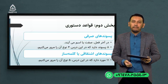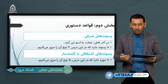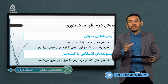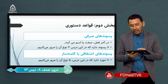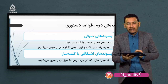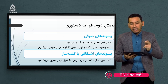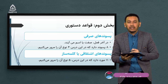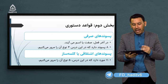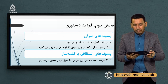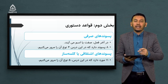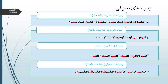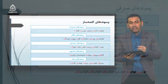وارد بخش دوم می‌شویم - در حوزه دستور زبان. در ادامه پسوندها می‌رسیم به شکل ساختاری و نحوه تشکیل پسوندهای صرفی و پسوندهای کلمه‌ساز. پسوندهای صرفی در آخر فعل، صفت یا اسم می‌آیند و هشت نوع داریم که چهار نوع آن را مرور خواهیم کرد. در حوزه پسوندهای اشتقاقی یا کلمه‌ساز، یازده مورد داریم که پنج نوع آن را ذکر می‌کنیم.